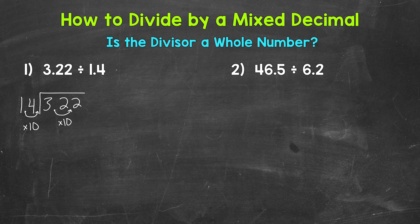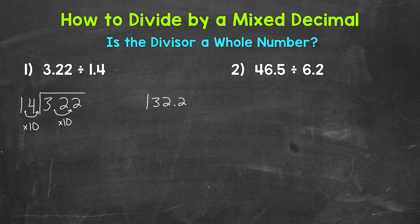Since our divisor is now whole, we can go through the division process — the same process we use with whole numbers: divide, multiply, subtract, bring down, repeat. We need to rewrite our new equivalent problem with the whole divisor.